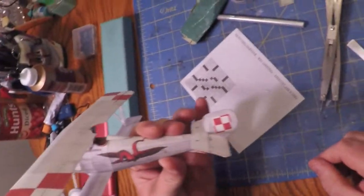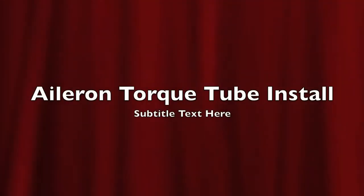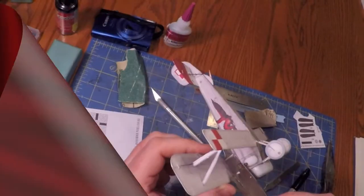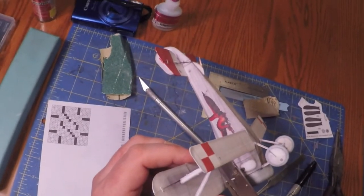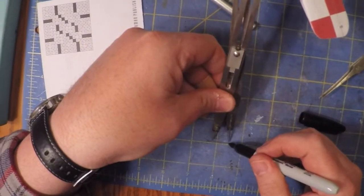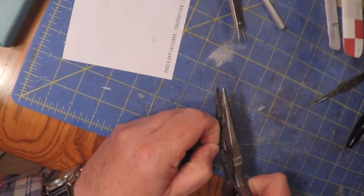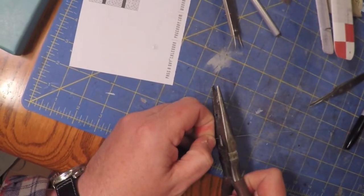Now the same thing here: measure where the torque tubes are going to go, mark them off, cut them, and add them with a little super glue.